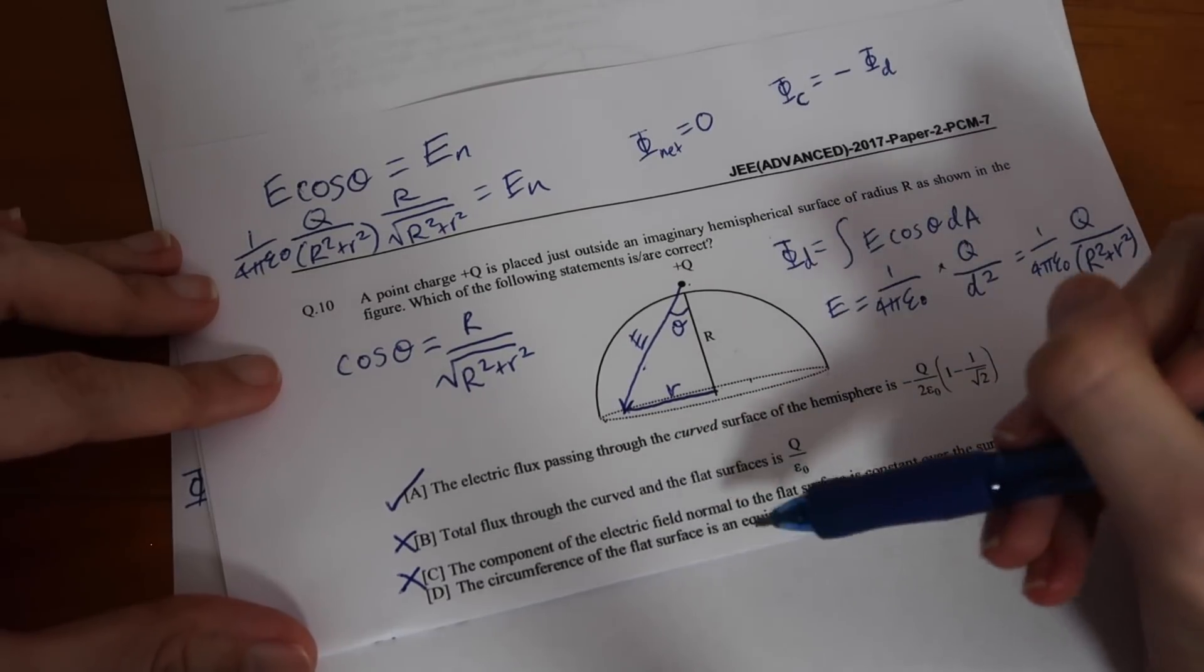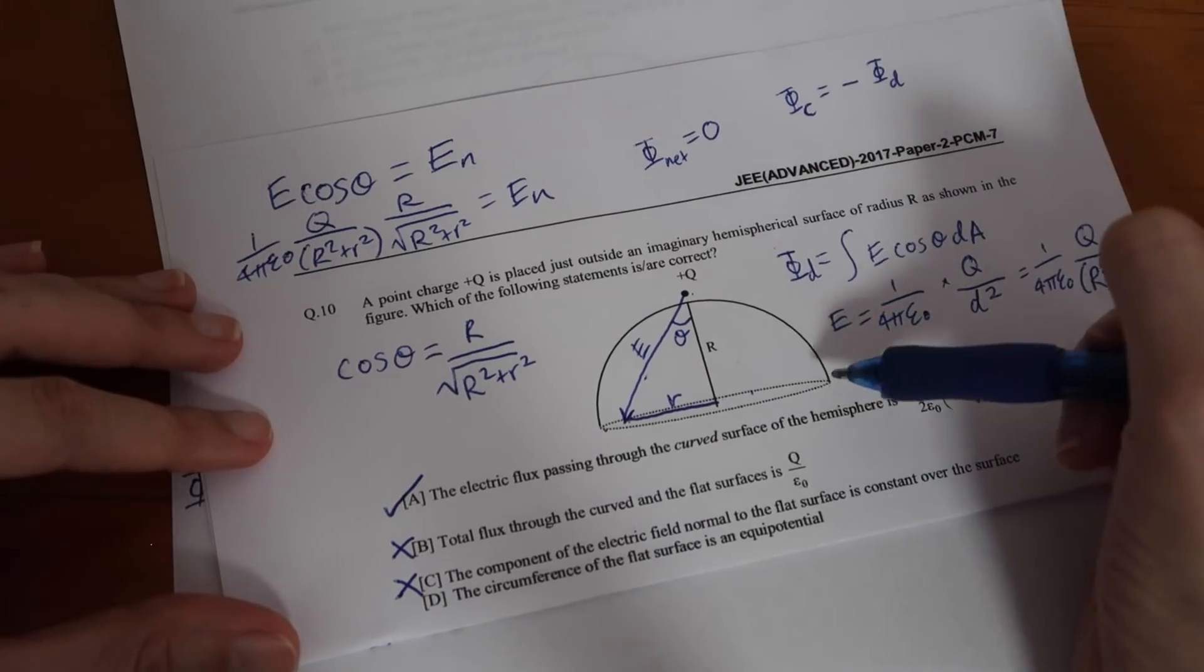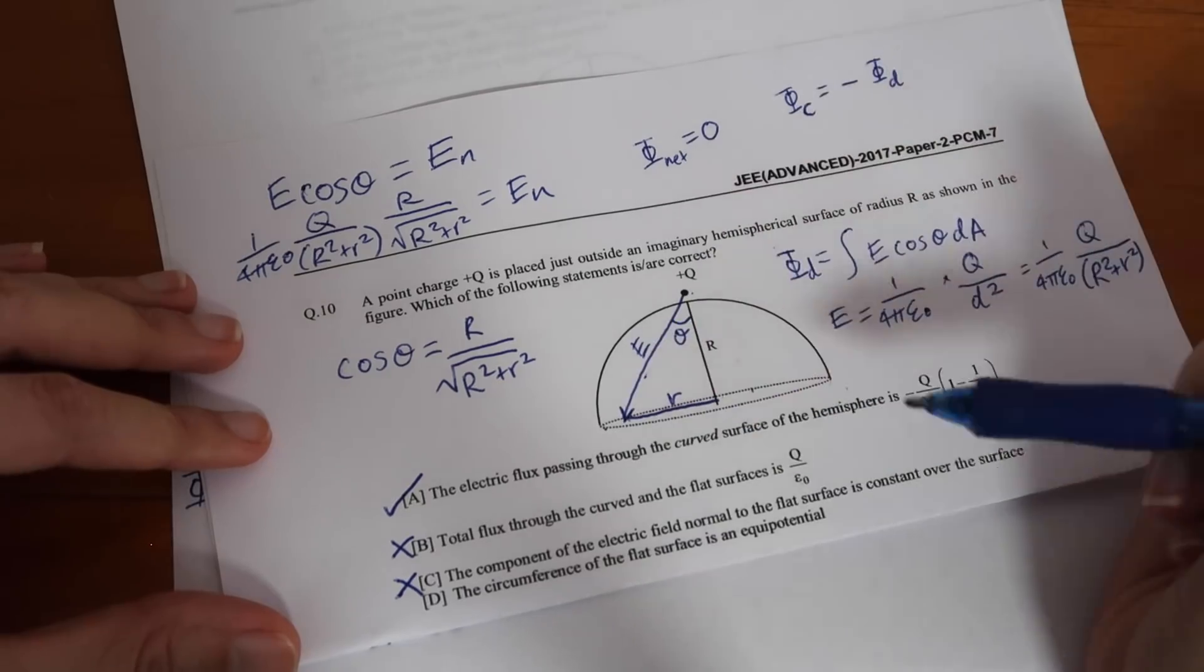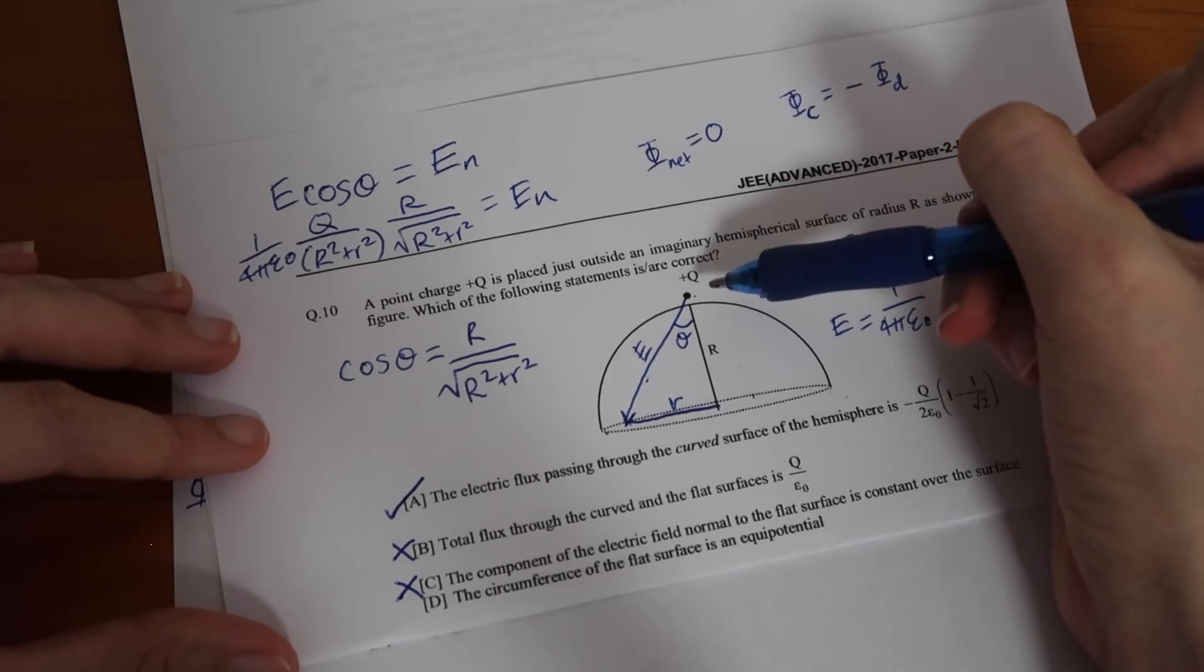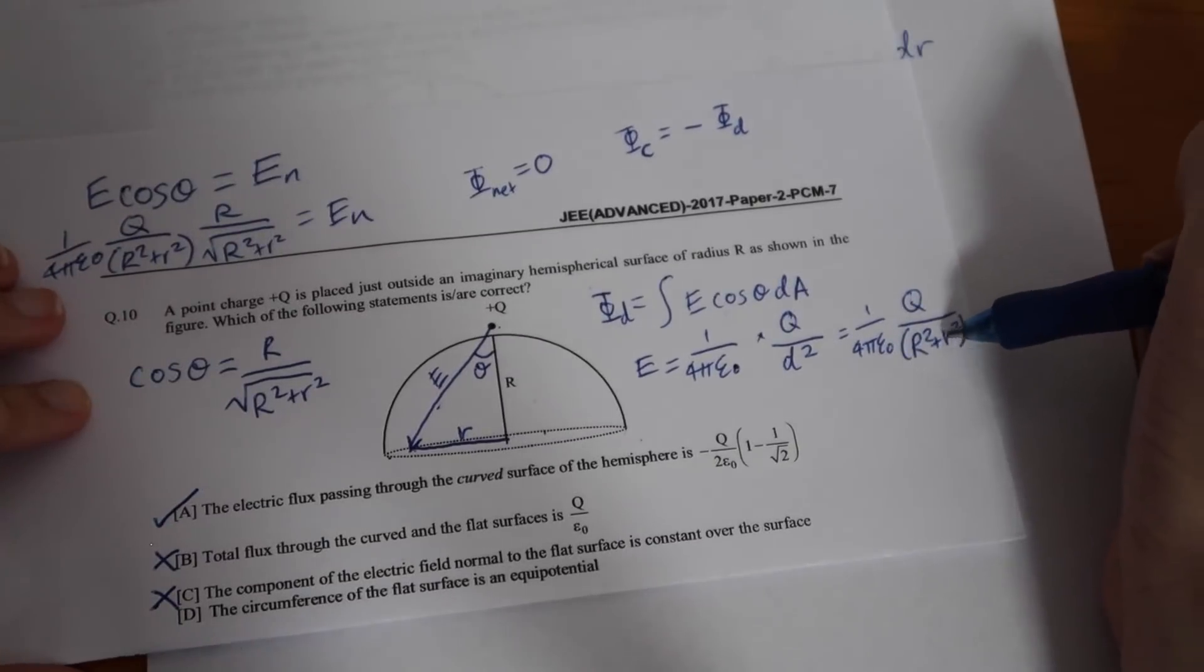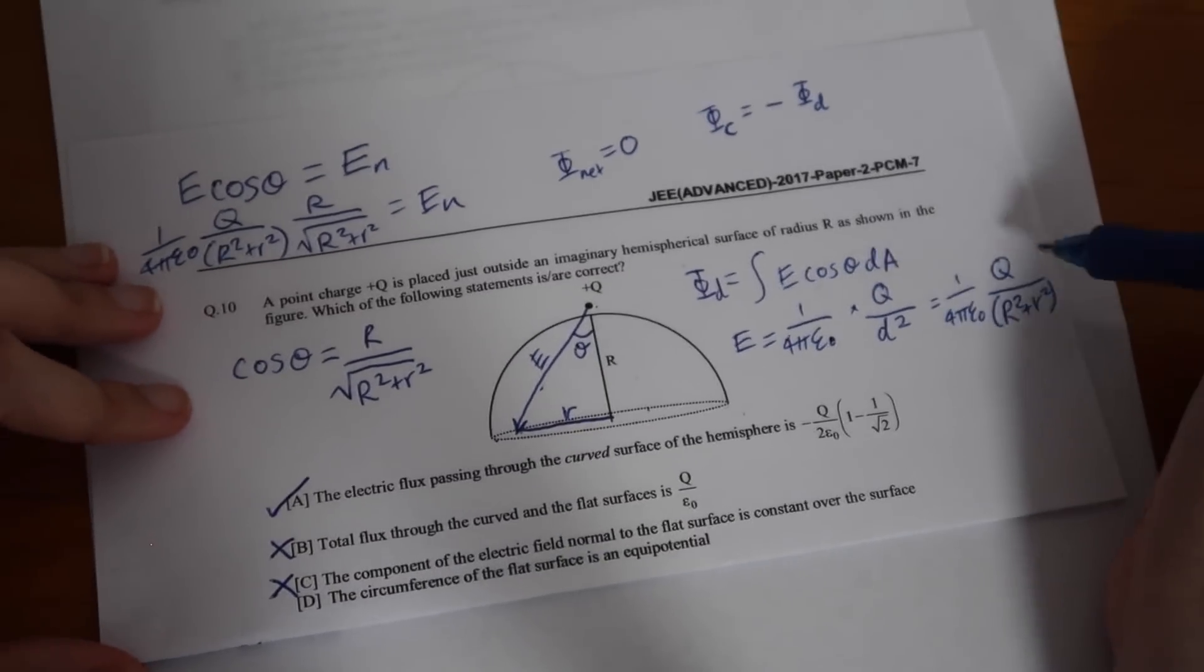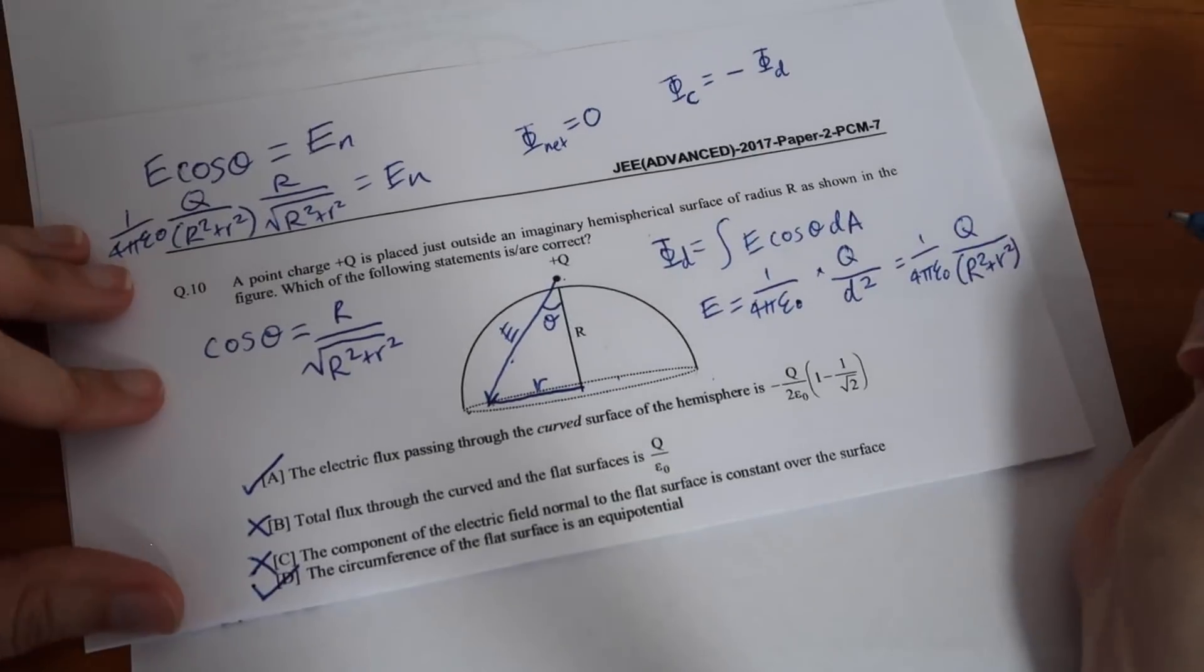Part d the circumference of the flat surface is an equal potential. So you know when little r is equal to the radius all the way around that circumference all those points are the same distance from our point charge so if we were to look at our electric field little r would be equal to big r and this would just be two r squared down the bottom here and that would be constant all around that point they're all the same distance away and that's all it took so yes d will be correct.